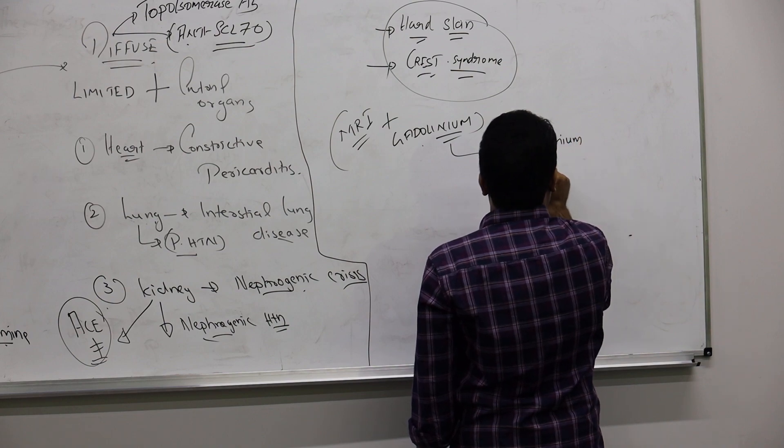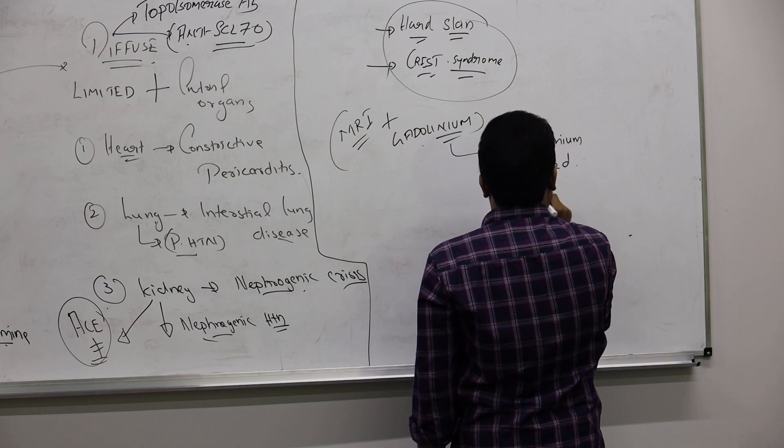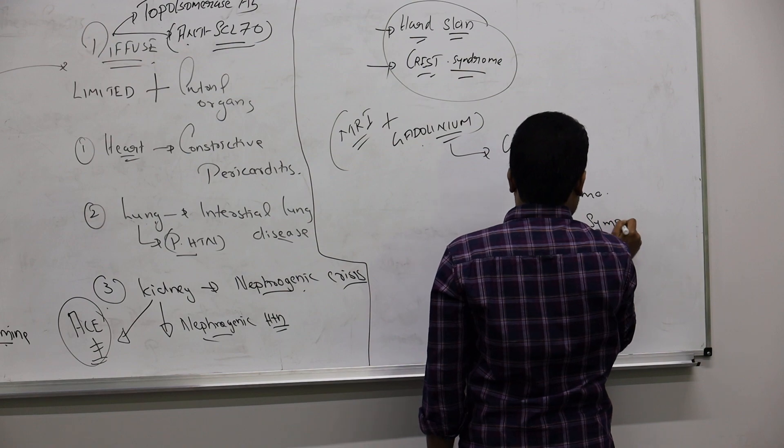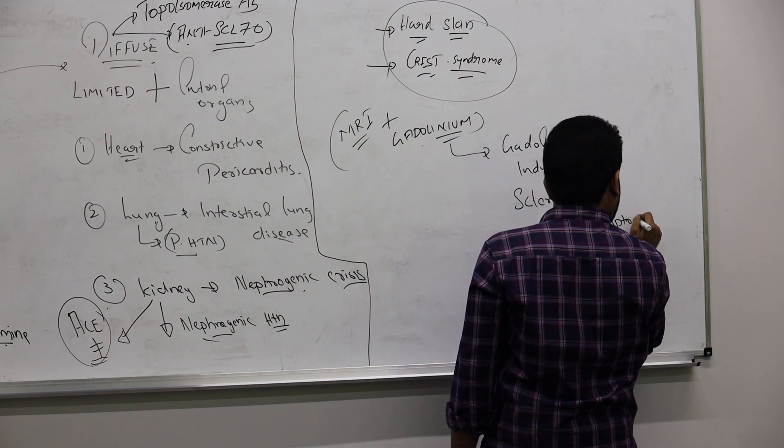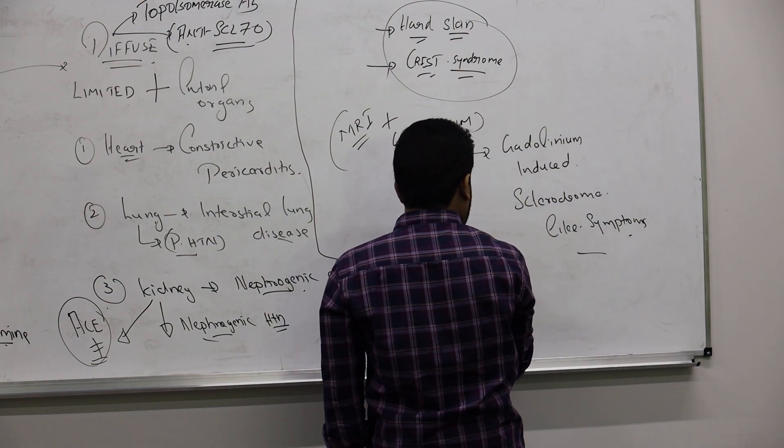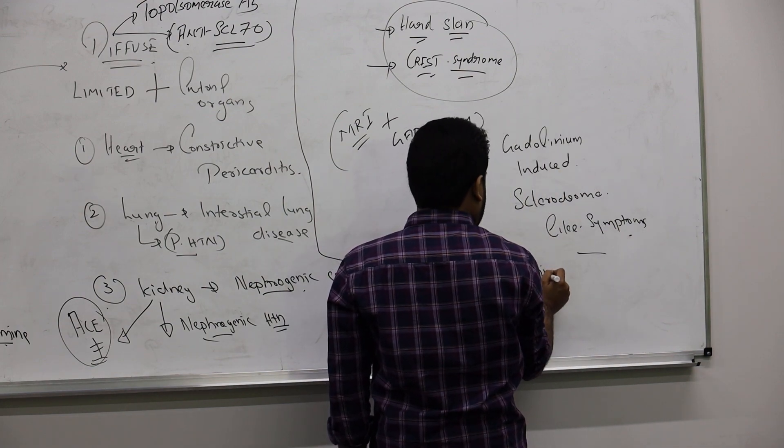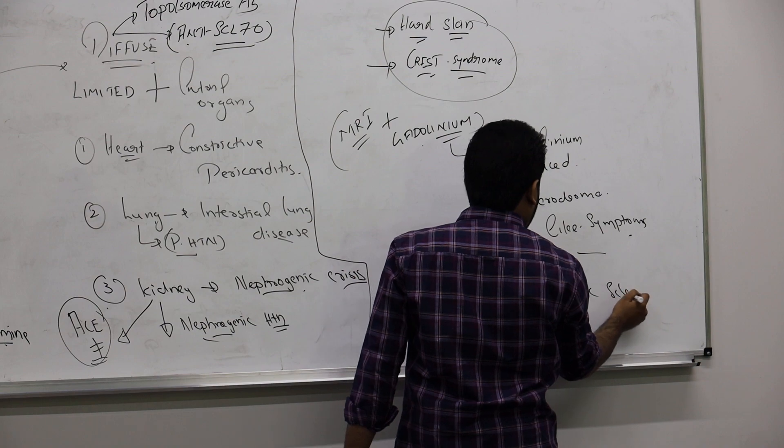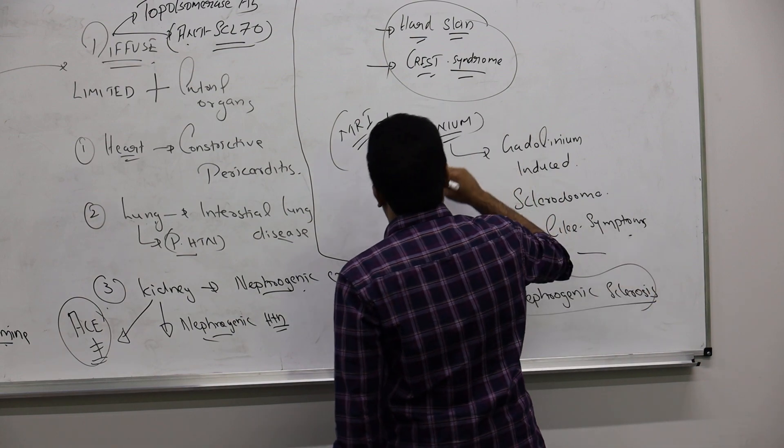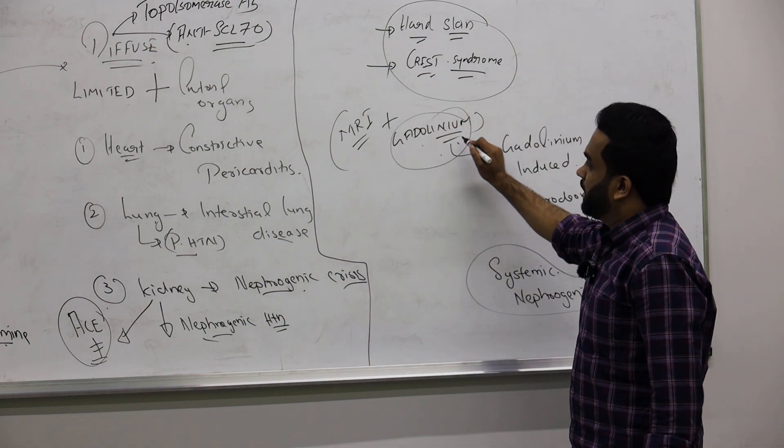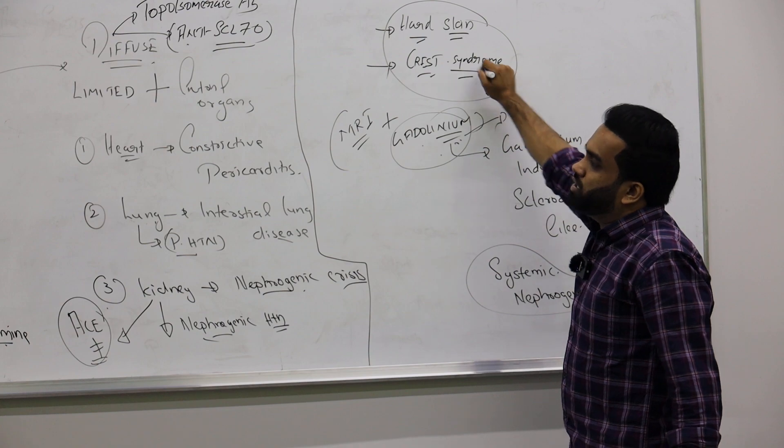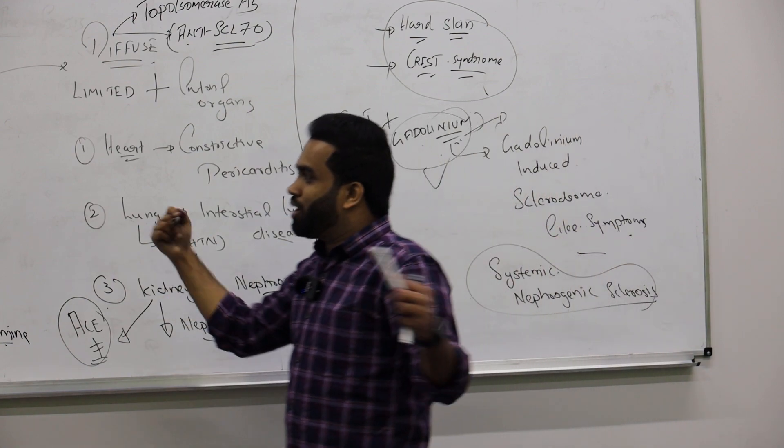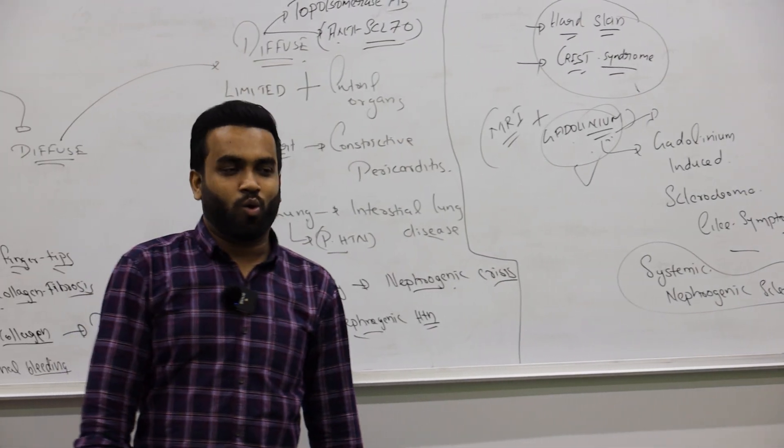That is called gadolinium-induced scleroderma-like symptoms. It is also called systemic nephrogenic sclerosis. There is no antibody here, it's not autoimmune. The person will mistake it for scleroderma, but actually it is not scleroderma because someone used a contrast that can cause kidney damage or lead to the same scenario like limited scleroderma. That must be ruled out every time. That's all about the important topic, scleroderma. Thank you.